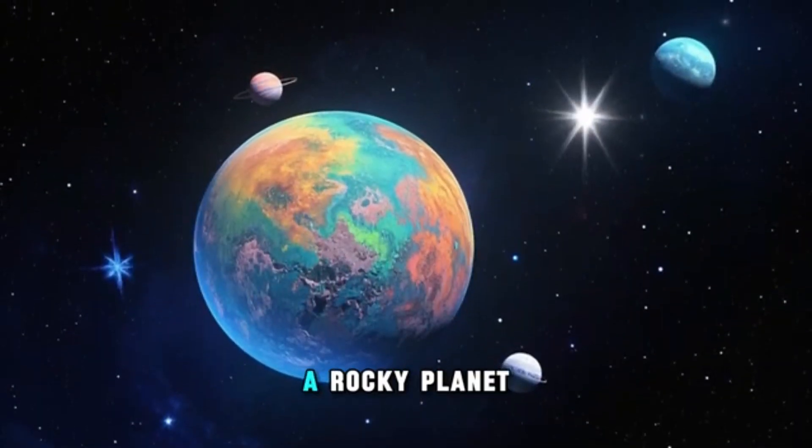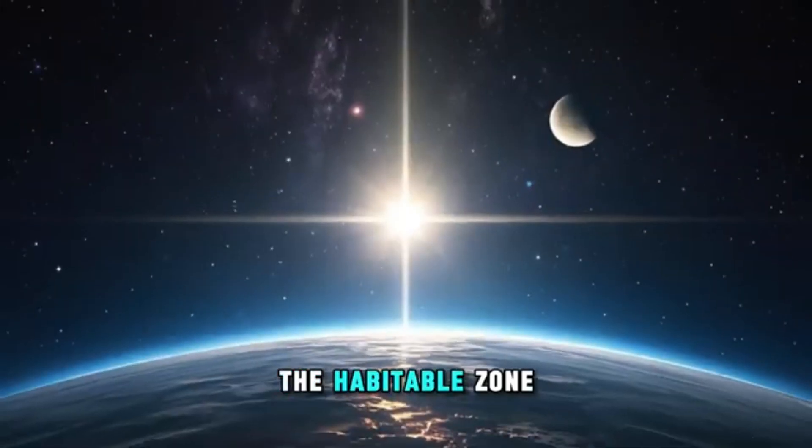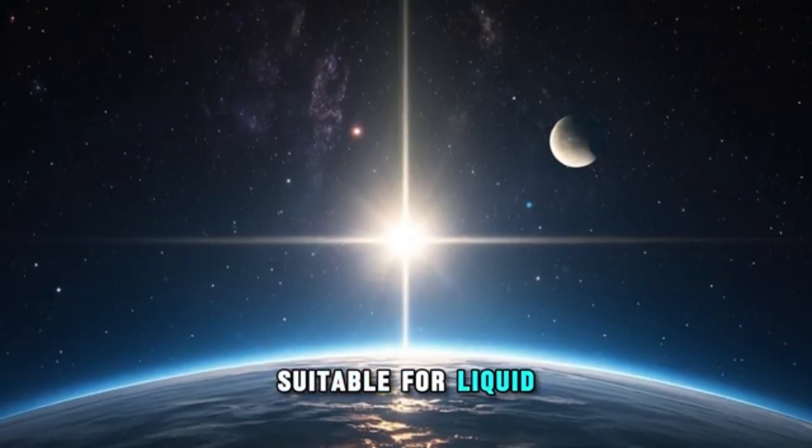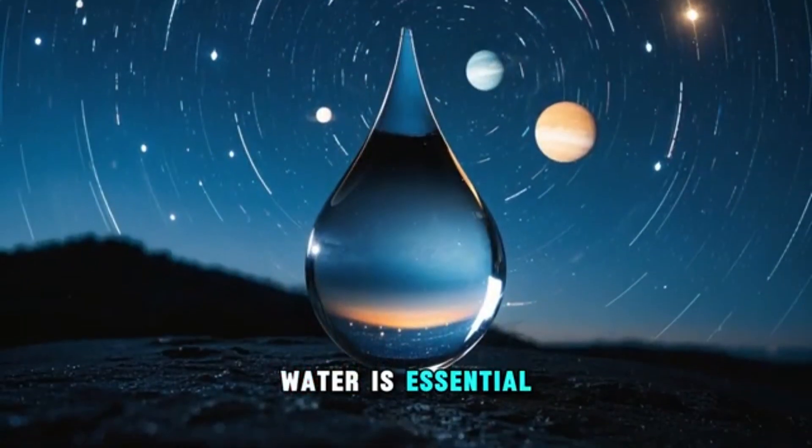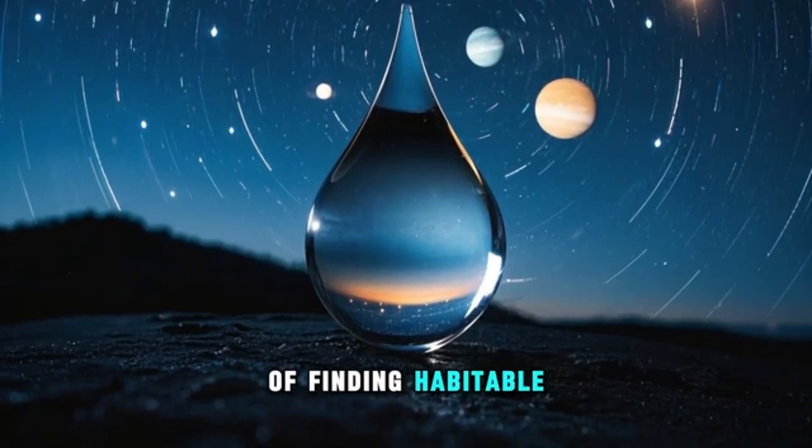Gliese 581g is a rocky planet located in the habitable zone of its star. The habitable zone is the region around a star where conditions are suitable for liquid water to exist on the surface of a planet. This is because water is essential for life as we know it, and its presence increases the likelihood of finding habitable worlds.